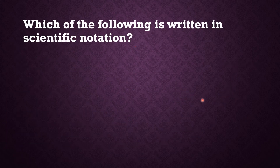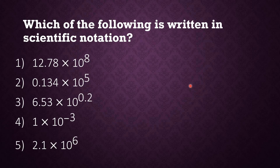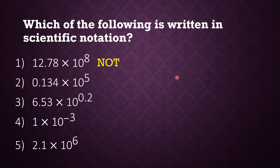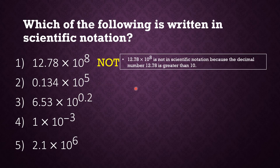Which of the following is written in scientific notation? Based on the definition, number one: 12.78 times 10 raised to 8 is not in scientific notation because 12.78 is greater than 10. Number two: .134 times 10 raised to 5 — the decimal number is less than one, so this is also not in scientific notation.